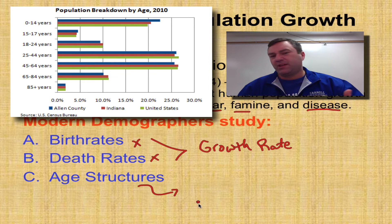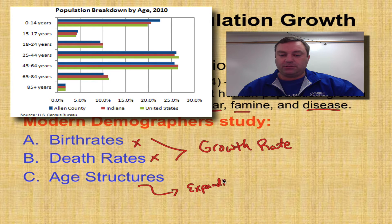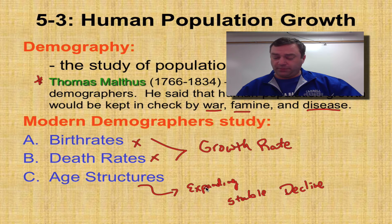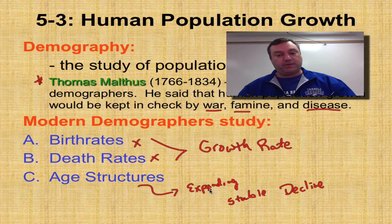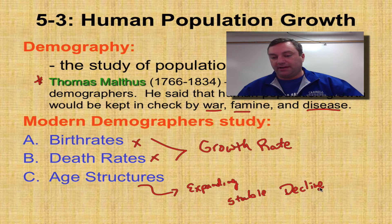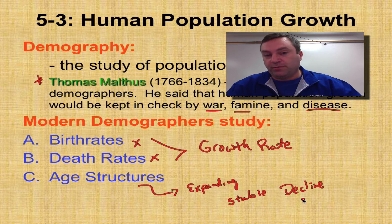Modern demographers also look at age structure. Age structure diagrams — we've seen these before and we're going to look at them again in a bit. These tell you if you have an expanding population, a stable population, or a declining population. Third world countries like India, which is starting to become a first world country but much of it is still very poor, are expanding. Parts of Europe, Canada, Iceland, and Greenland are pretty stable. Declining populations include Italy recently, or Russia possibly, and areas where civil war is going on in the world.